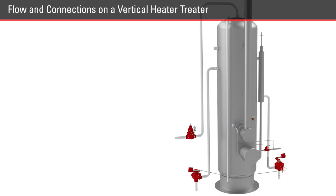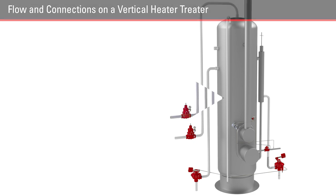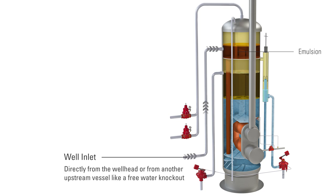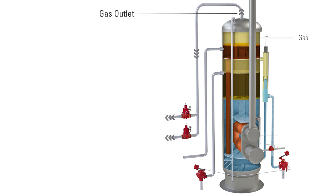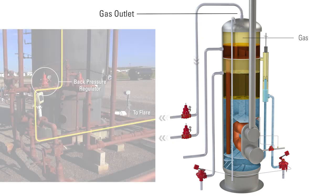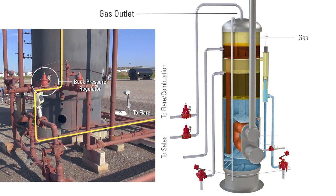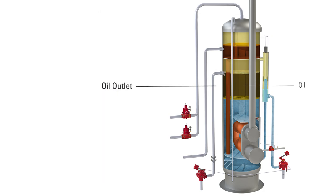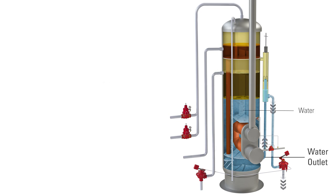You will need to know the basic flow and connections of a vertical treater when talking with a customer. The well inlet is where the well stream enters the treater, either directly from the well head or from an upstream vessel like a free water knockout that has achieved some initial separation. The gas outlet removes gas that rises to the top of the vessel, sending it to flare, combustion, or sales. The oil outlet processes oil from the middle of the vessel out for storage and sales, while the water outlet on the right side dumps water from the bottom of the vessel for recycling or disposal.